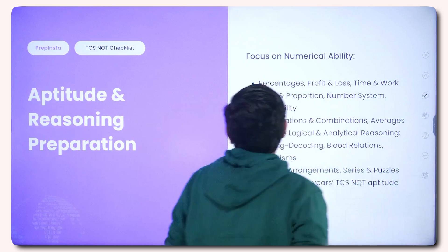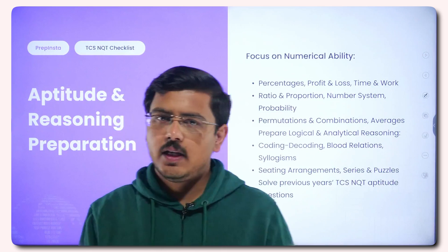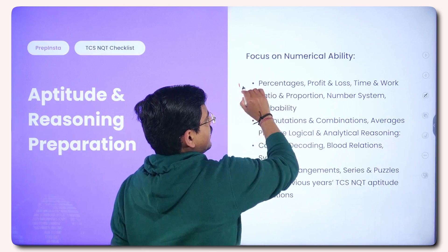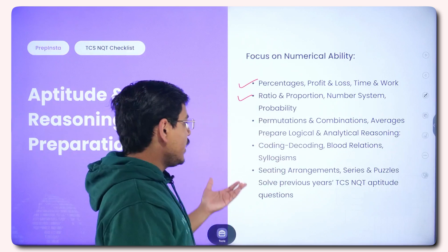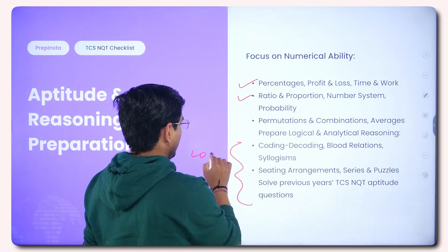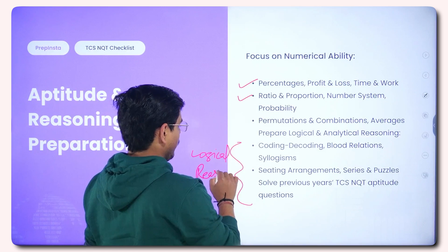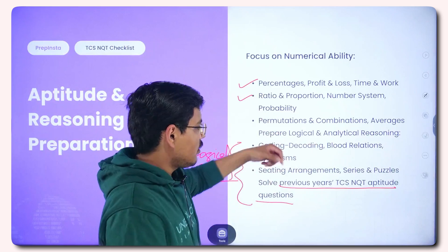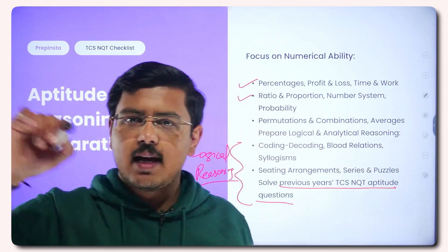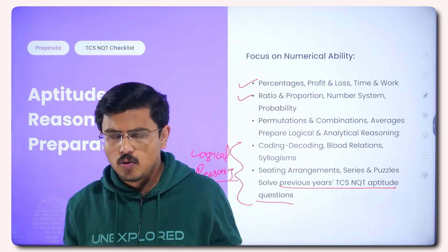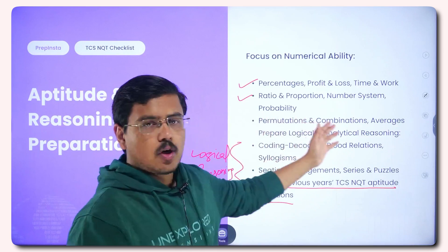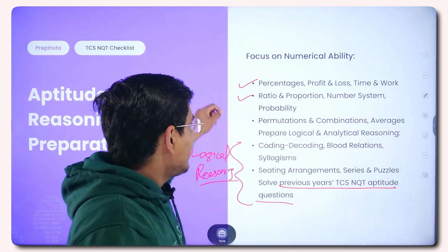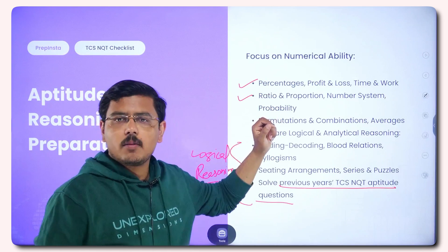Next comes aptitude and reasoning preparation — equally important. About 80% of candidates are eliminated here. The checklist includes: numerical ability topics like percentages, profit and loss, ratio and proportion, number system, probability, permutations and combinations, and coding-decoding which falls more under logical reasoning. You should also solve previous year TCS NQT aptitude questions. Use this checklist like a register — jot things down and put a tick mark against whatever you complete.